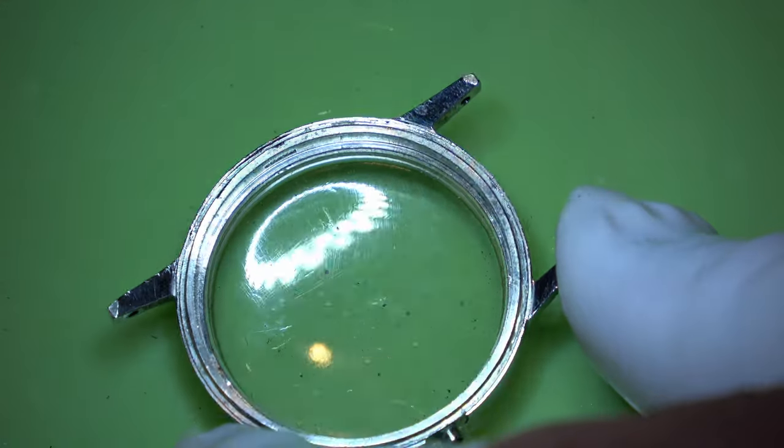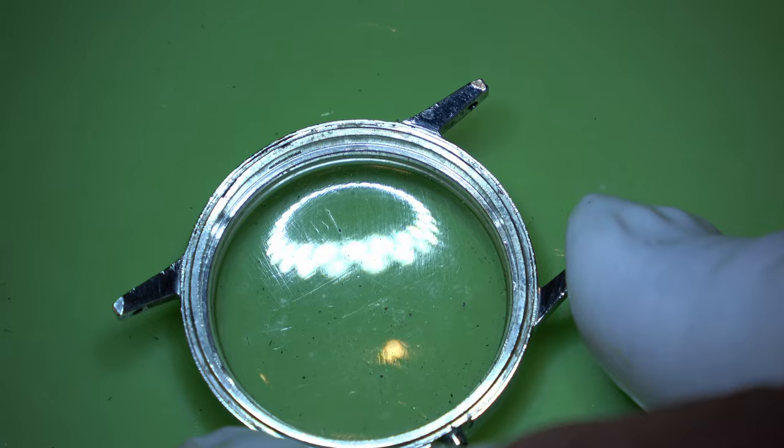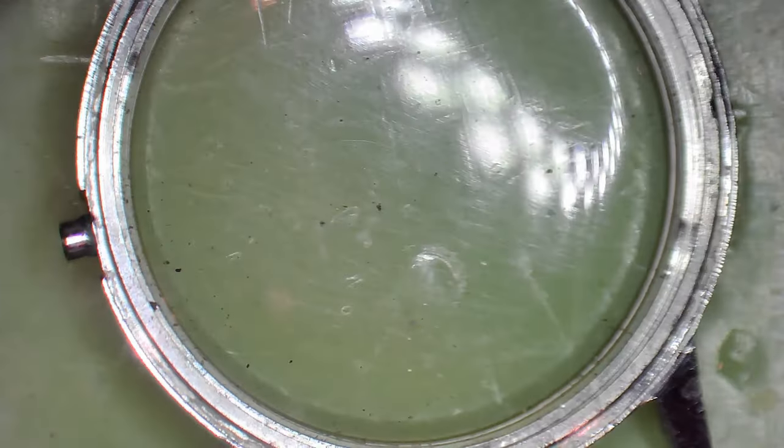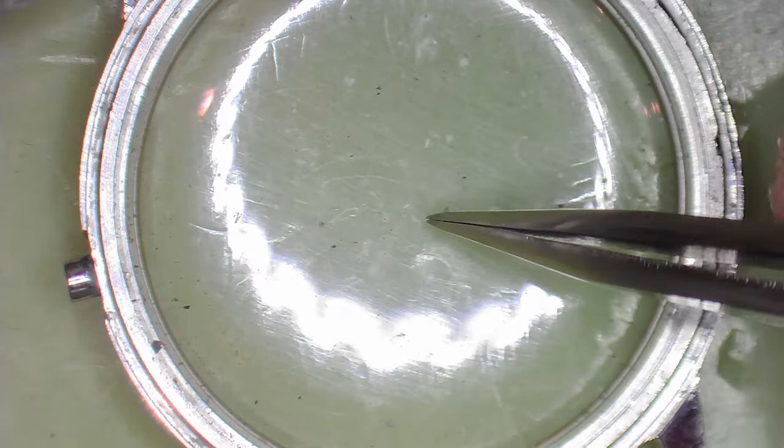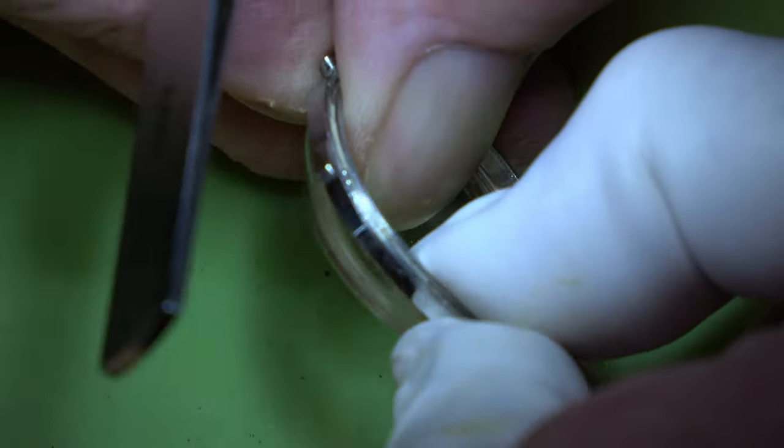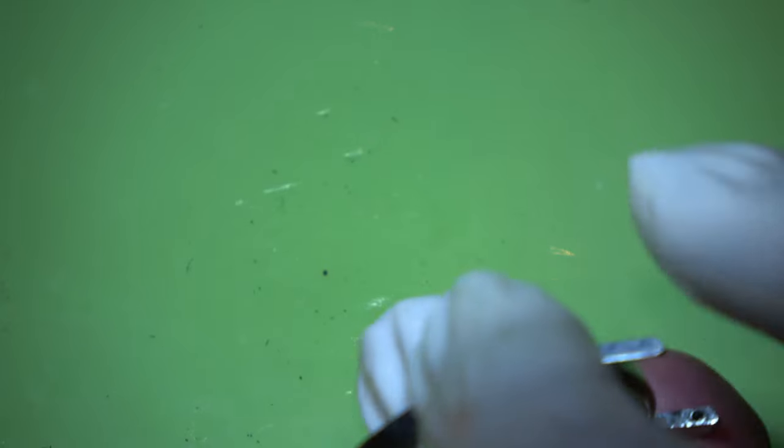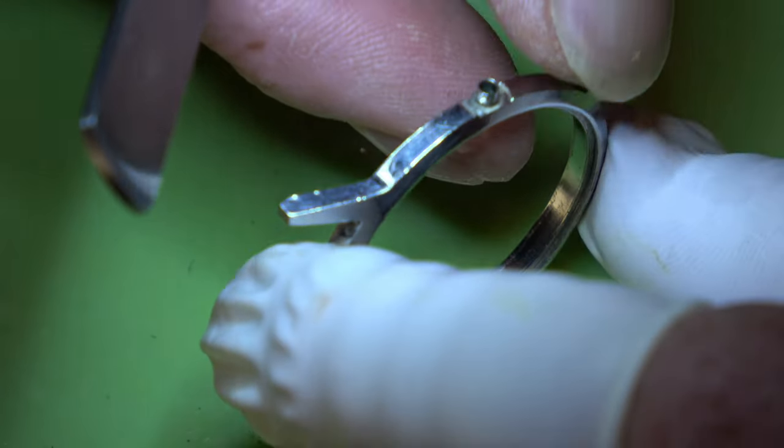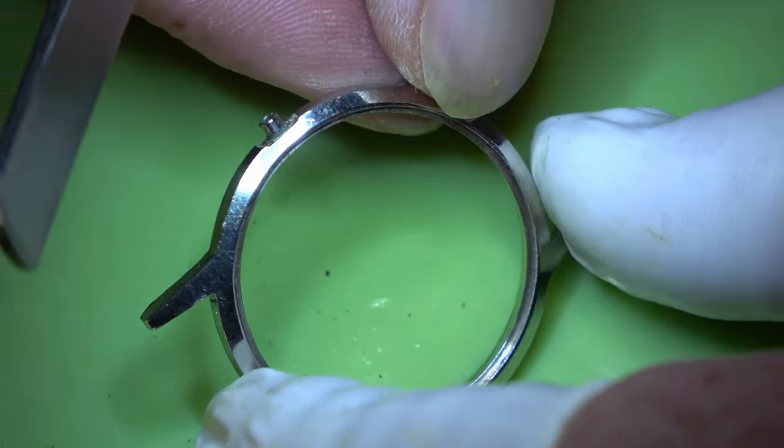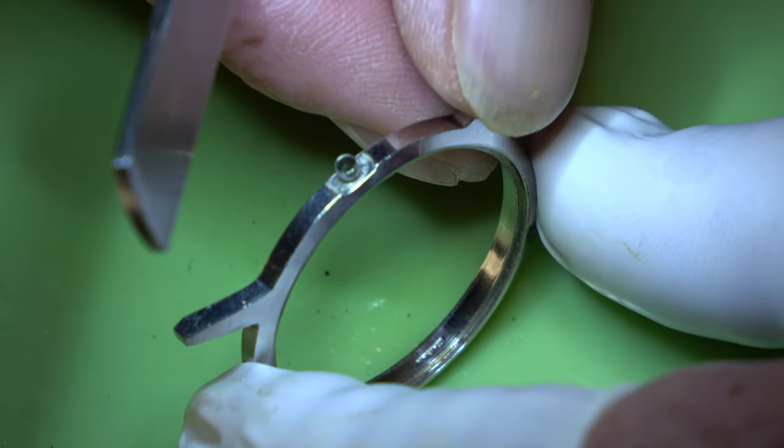There is this retaining ring and we can get it out of the case. Before we start on the movement we will have a little look at this case. I don't know if you can see all of those little specks on the inside. We will give that crystal a clean up.